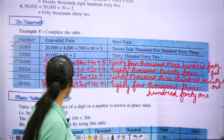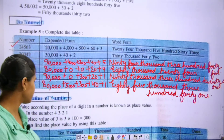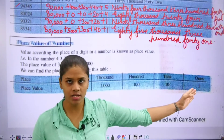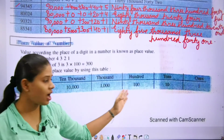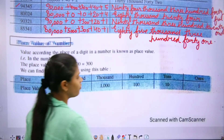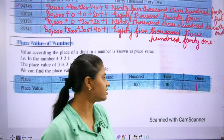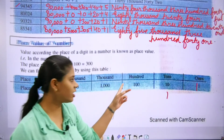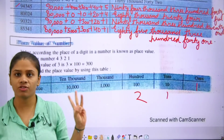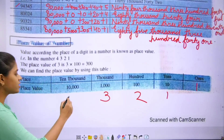Move to the next one. Place value of numbers. Now we have to understand the place value of numbers. Let's start. Ones has only one digit. In tens, there is only one zero. In hundreds, there are two zeros. In thousands, there are three zeros. And in ten thousands, there are four zeros.